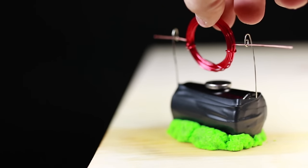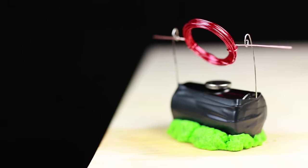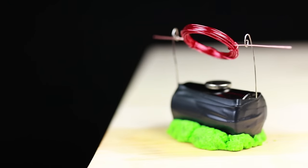If the insulation is removed from both sides of the wire, the electromagnet will turn to face the neodymium magnet but then stop once both of the magnetic fields are lined up.